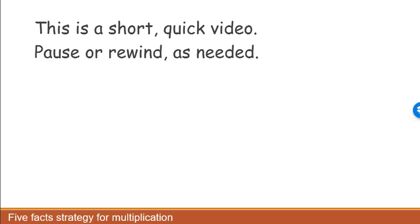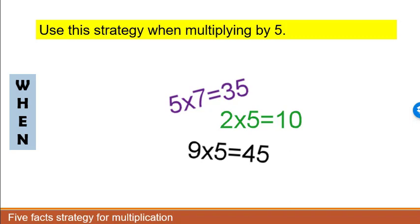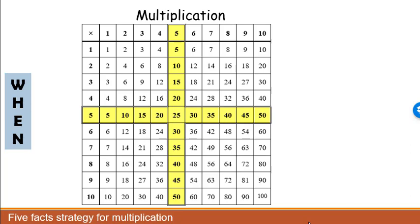This strategy is used for multiplying by 5, for example 5 times 7 or 2 times 5 or 9 times 5. Our goal for strategies is to have a strategy for every entry in the multiplication table, but we do it in pieces.